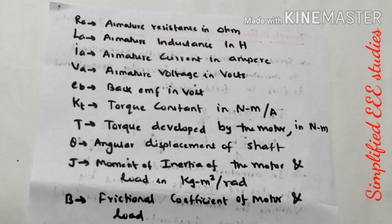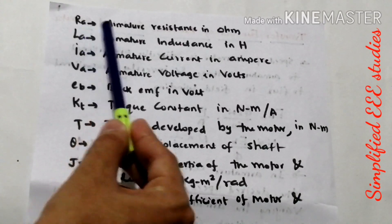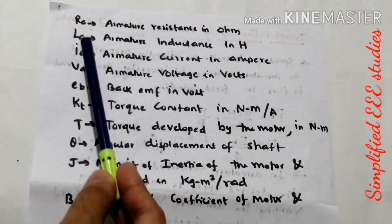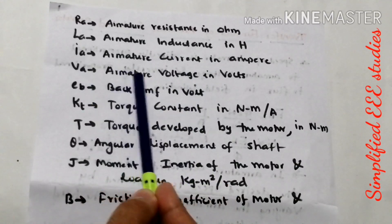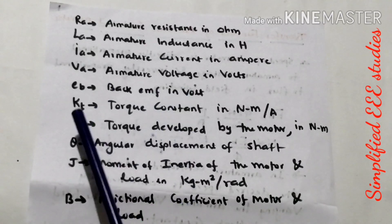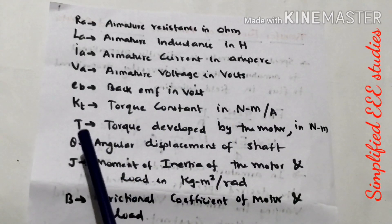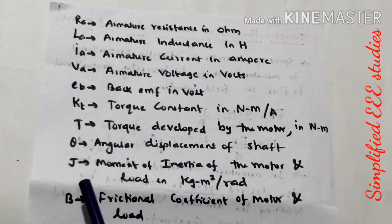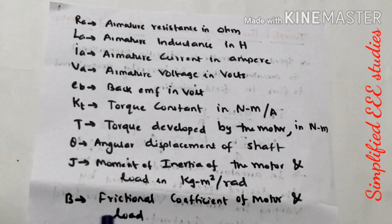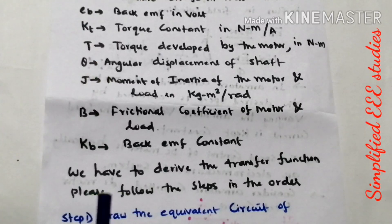Before moving to the derivation of transfer function we have to be familiar with all the terminologies. Ra stands for armature resistance expressed in ohms. La stands for armature inductance in Henry. Ia represents armature current in ampere. Va represents armature voltage in volt. Eb stands for back EMF in volt. Kt represents torque constant in newton meter per ampere. T stands for torque developed by the motor in newton meter. Theta represents angular displacement of the shaft. J represents moment of inertia of the motor and the load in kilogram meter square per radian. B represents the frictional coefficient of the motor and the load. Kb indicates the back EMF constant.